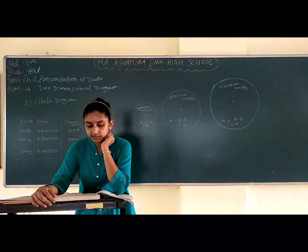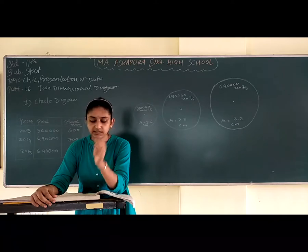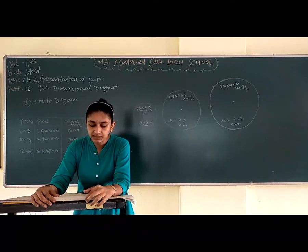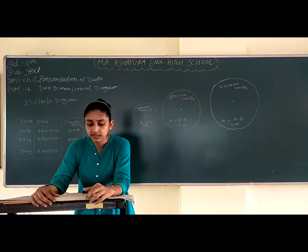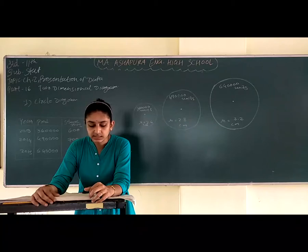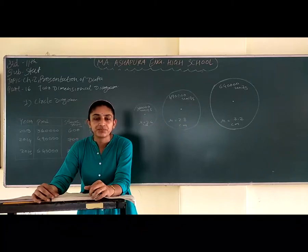If the radius of the circle is too large, then it is divided by a constant. And if it is too small, then it is multiplied by a constant, and then the circle diagram is drawn.